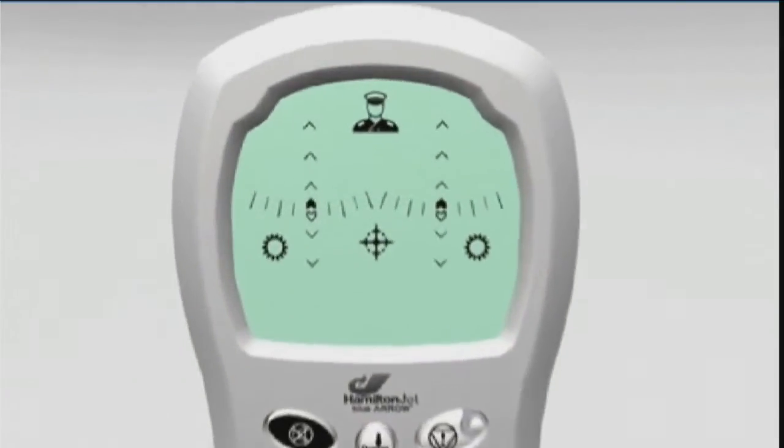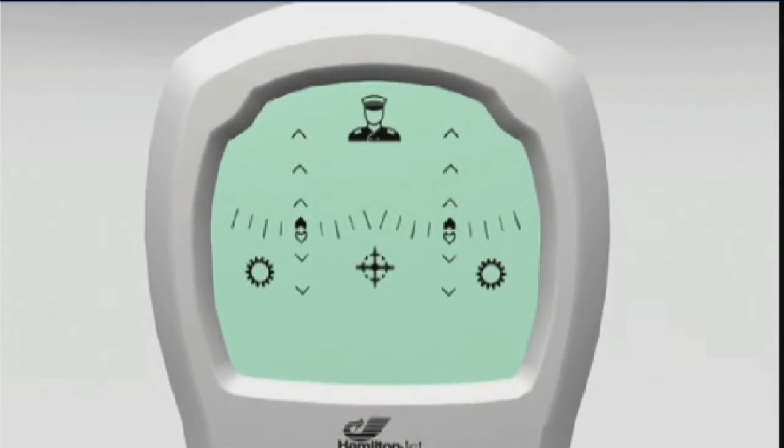Its display provides a wide range of information about the status of the control system, including indicators for steering and astern deflector positions on each water jet unit and gearbox engagement. It also displays a range of alarm signals using both symbols and text alerts.